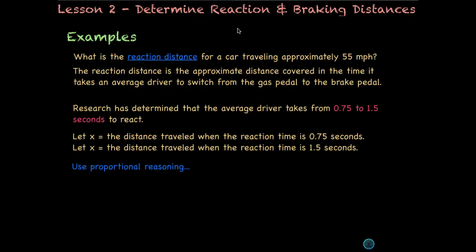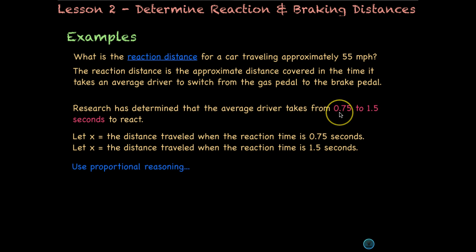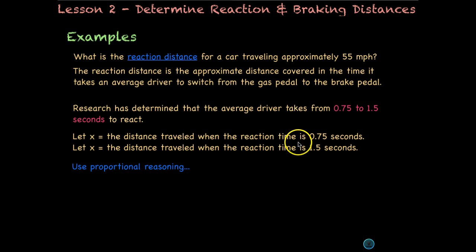Now let's look at an example. What is the reaction distance for a car traveling approximately 55 miles per hour? The reaction distance is the approximate distance covered in the time it takes an average driver to switch from the gas to the brake pedal. Research has found that drivers take anywhere from 0.75 seconds to 1.5 seconds to react. We're going to find the range using proportional reasoning.